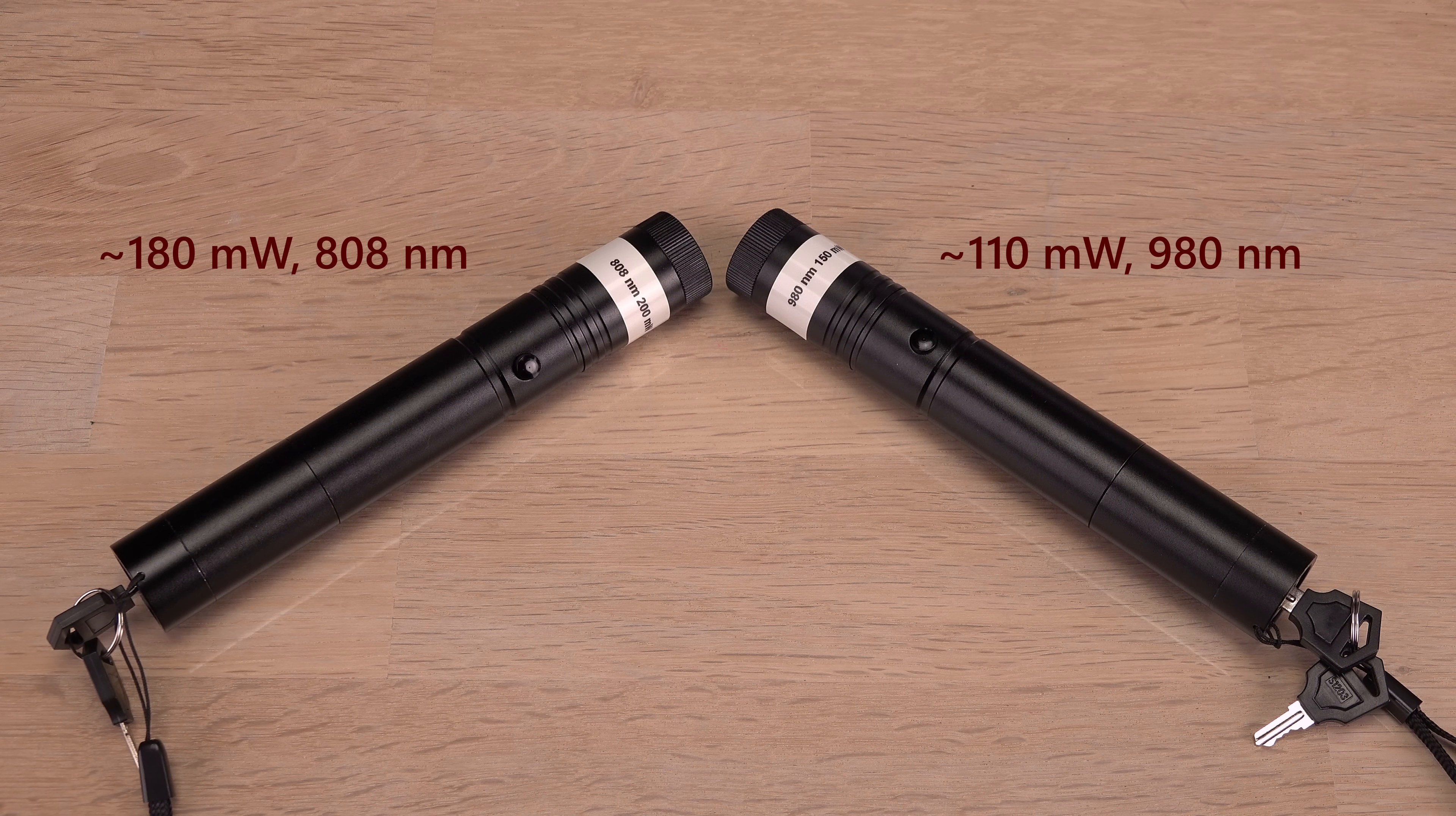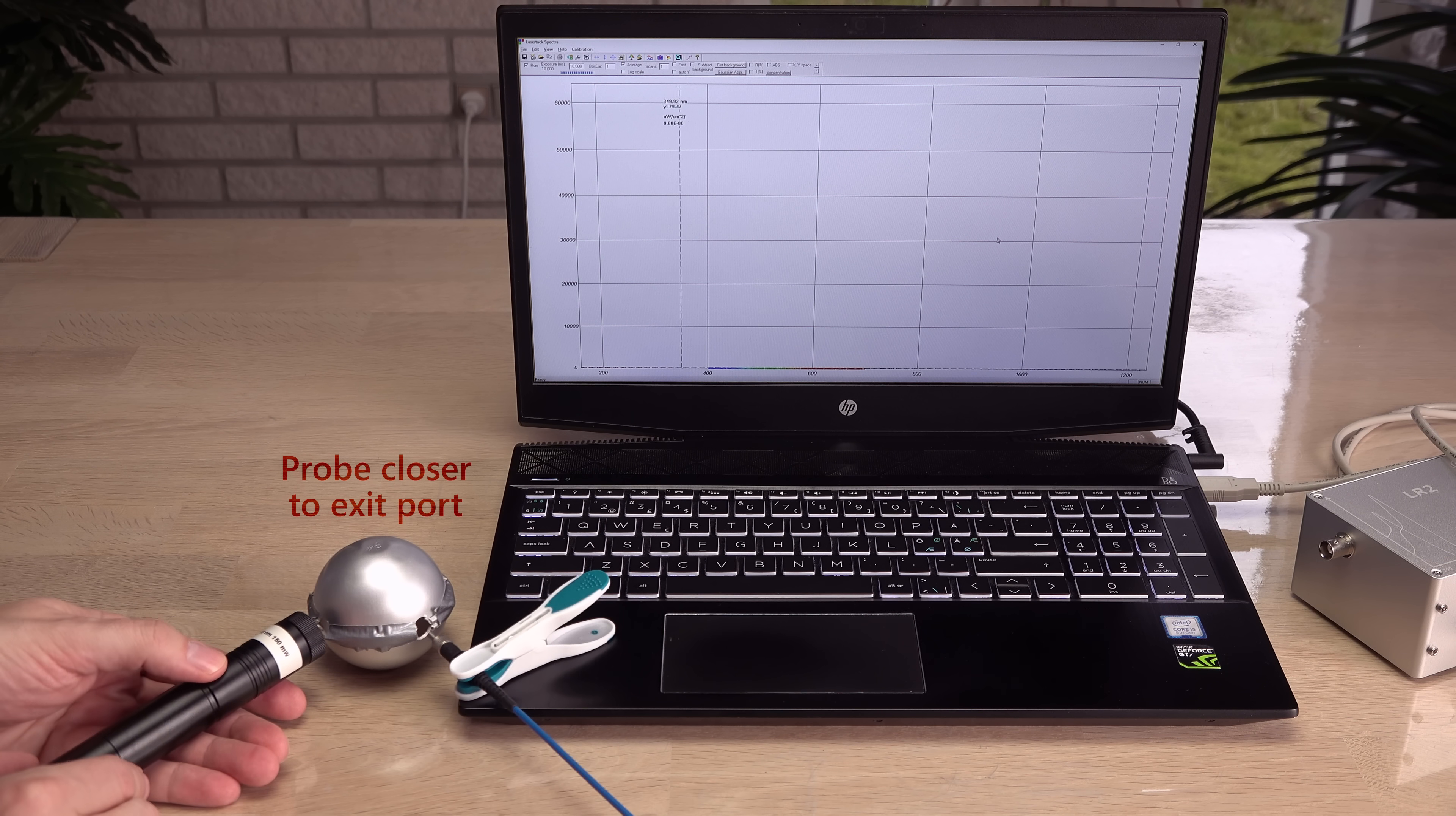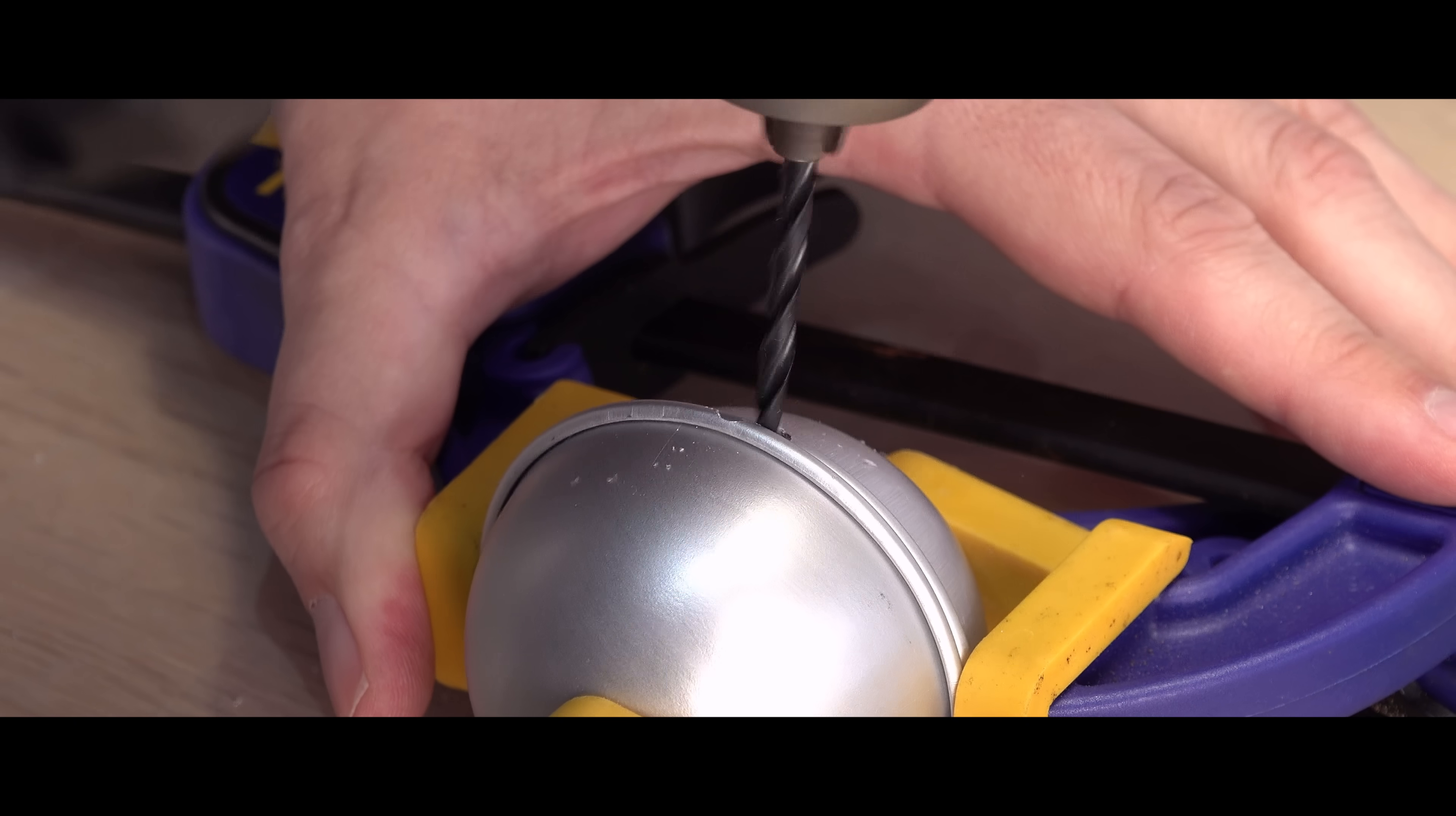I have one more challenge for the barium sulfate: infrared lasers. First an 808 nanometers. Seems to be reflected just fine. How about 980 nanometers? Okay, this does not seem to be reflected nearly as much. I need to measure closer to the port with longer exposure time. Still, I will call this a success.